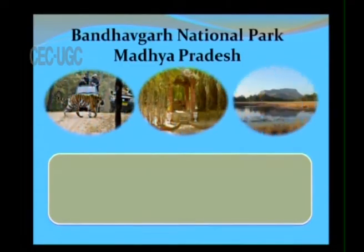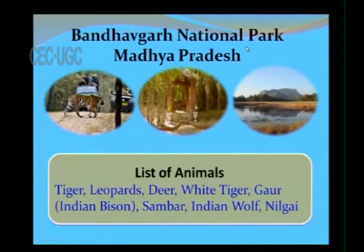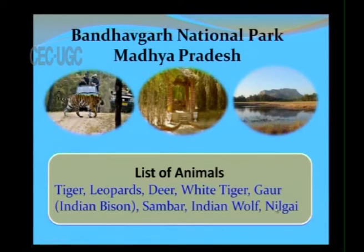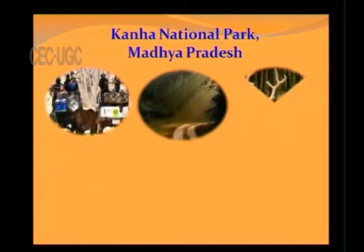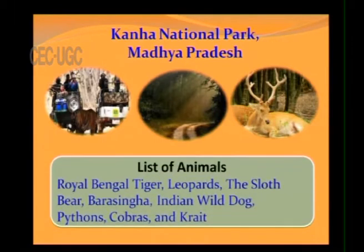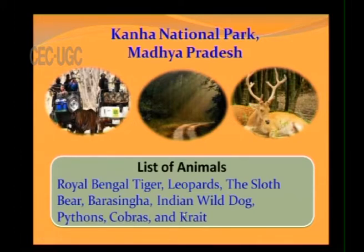Bandhavgarh National Park in Madhya Pradesh has a good population of wild tigers, leopards, deer, white tigers (an endangered species), gaur (Indian bison), sambar, Indian wolf, and Nilgai. Kanha National Park, very large and well-maintained, hosts royal Bengal tigers, leopards, sloth bear, barasinga, Indian wild dog, python, cobras, and krait — it is one of the best-maintained national parks in the northern region.